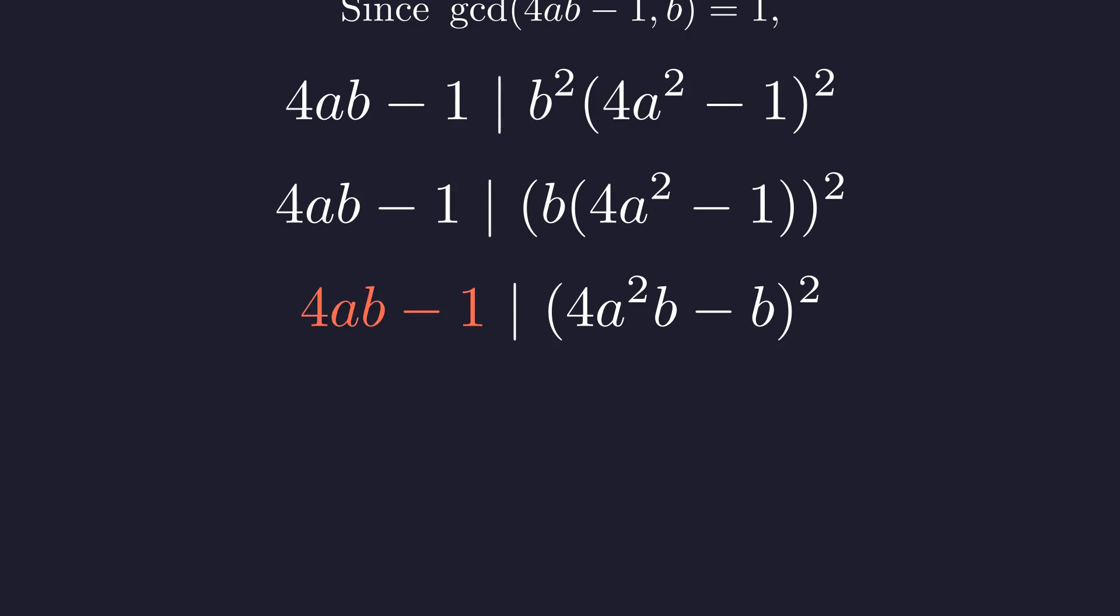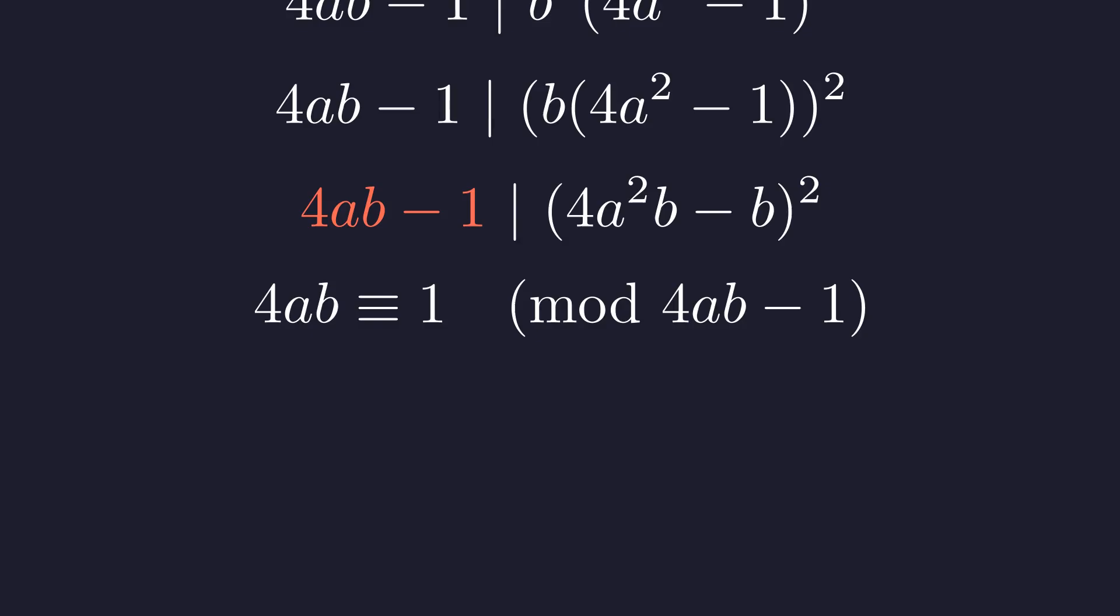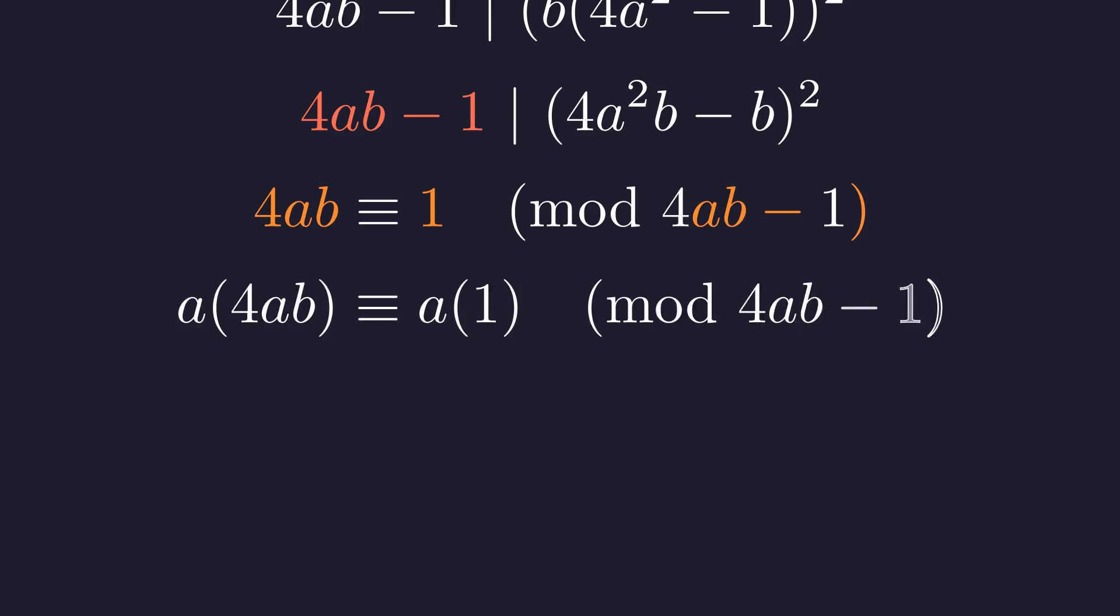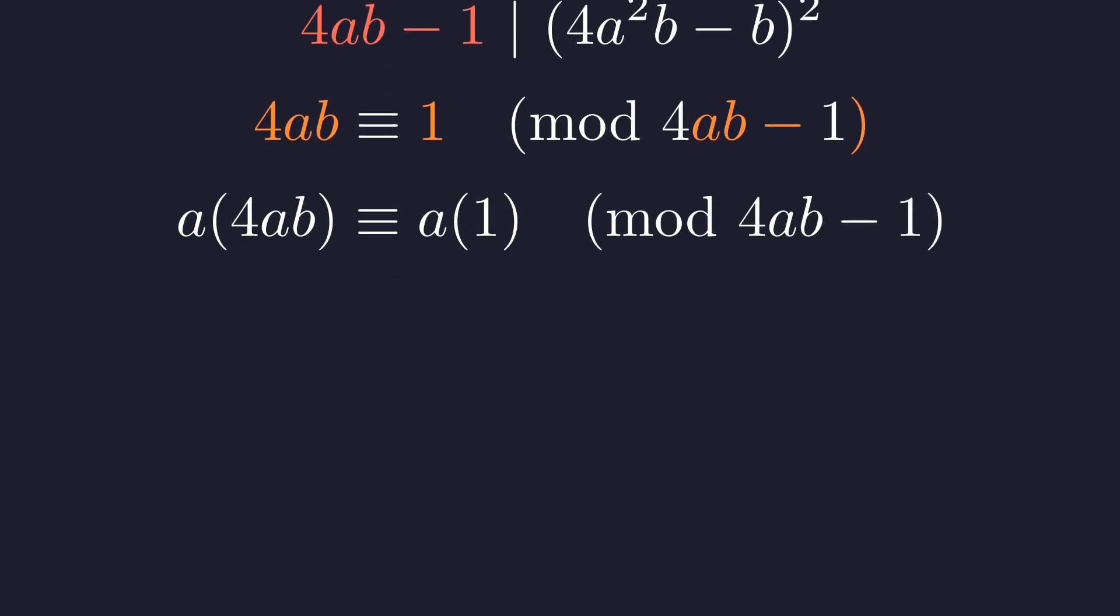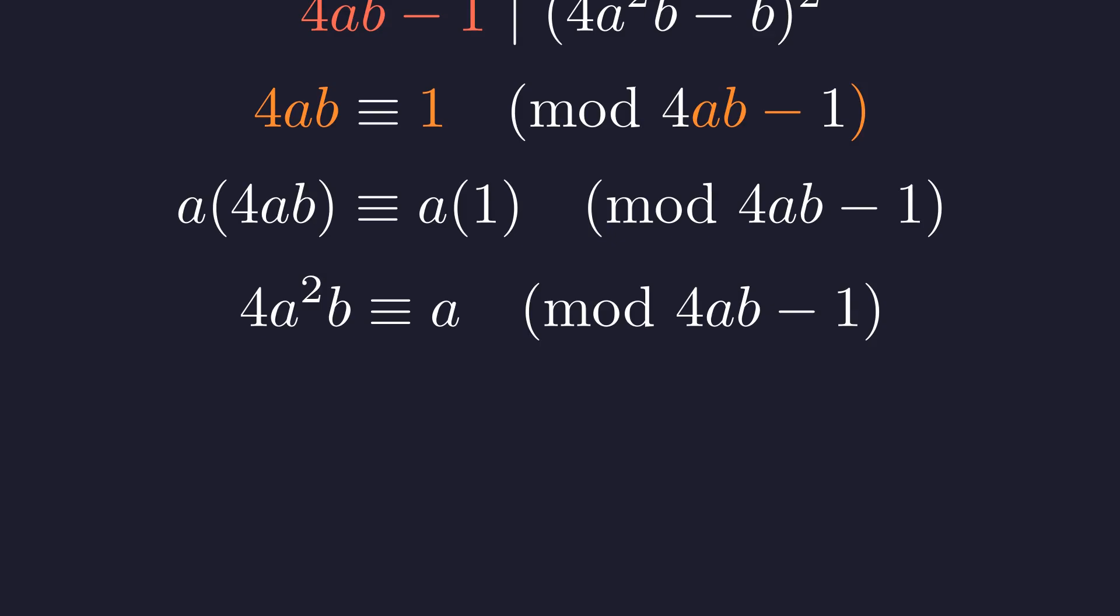Let us now work modulo 4 times A times B minus 1. By definition, 4 times A times B is congruent to 1 modulo 4 times A times B minus 1. This is the fundamental relation we will use. From this key relationship, we can deduce the congruence for 4 times A squared times B. Multiplying both sides by A yields a significant simplification.